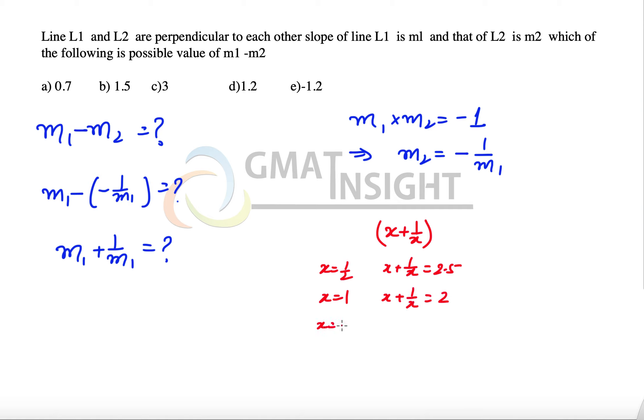If we substitute x equal to 1.5, then the value of x plus 1 over x becomes 1.5 plus 1 over 1.5. 1 over 1.5 is the same as 2/3, which has value 0.66, meaning 2.16.